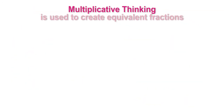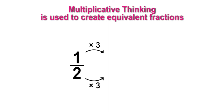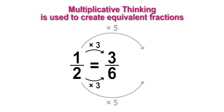Multiplicative thinking is also used when producing equivalent fractions. When given the fraction 1 half, I could multiply the numerator and the denominator by any number to produce an equivalent fraction. If I multiply each by 3, I would produce the equivalent fraction 3 sixths. If I multiply by 5, I would produce the equivalent fraction 5 tenths.